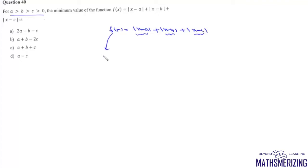This function f(x) will assume its minimum value at the median of the series which is a, b, and c. Since a, b, c are arranged in descending order, the median will be b. So this function f will have minimum value when the value of x is b.